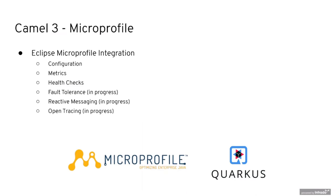In CAMEL 3, we support the Eclipse MicroProfile specification. The top three parts on the slide — configuration, metrics, and health checks — are already there. The other three — fault tolerance, reactive messaging, and open tracing — will be part of the next release and are currently in progress.